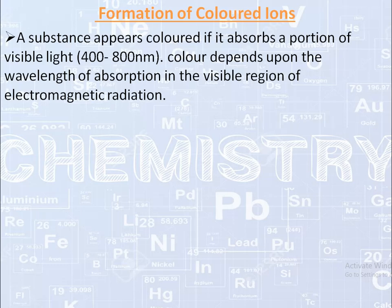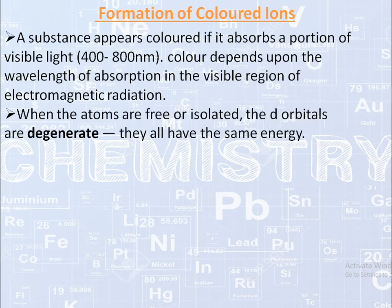Most compounds of transition metals are colored in their solid or solution form. We know that there is an unpaired electron present in the d-orbital of transition elements. When transition elements are not bonded to anything else, their d-orbitals are degenerate — meaning when the atoms are free or isolated, the d-orbitals all have the same energy. When they start bonding with other ligands, due to differences in symmetries of the d-orbital and the inductive effect of the ligand on the electron, the d-orbitals split apart and become non-degenerate.